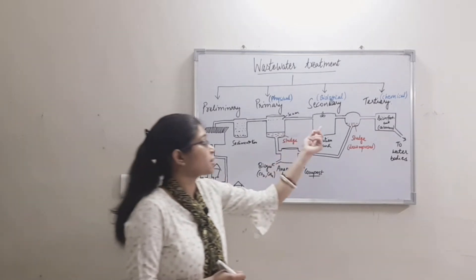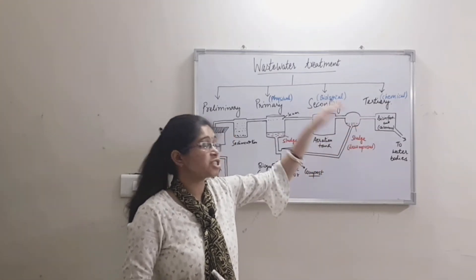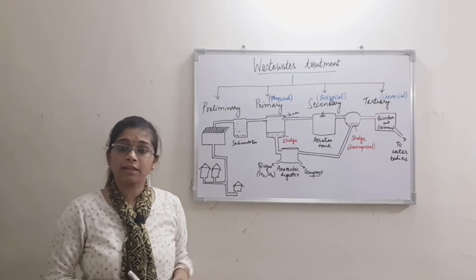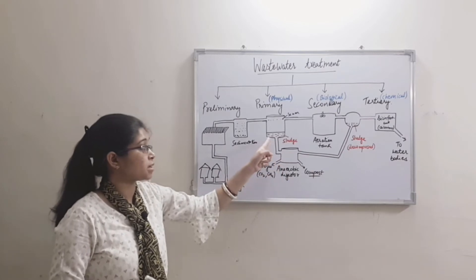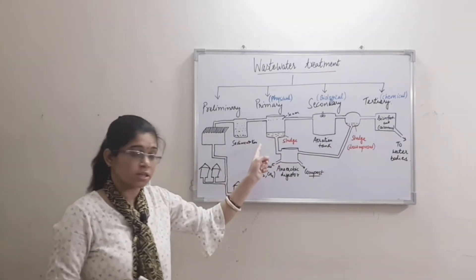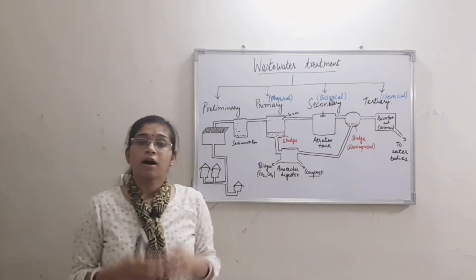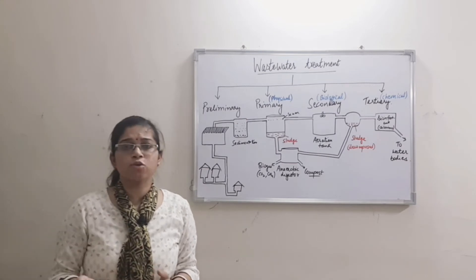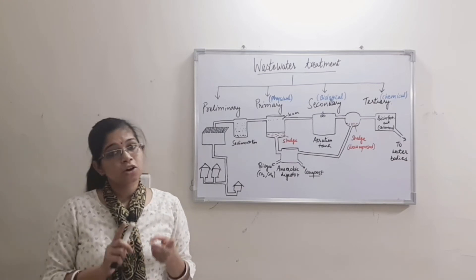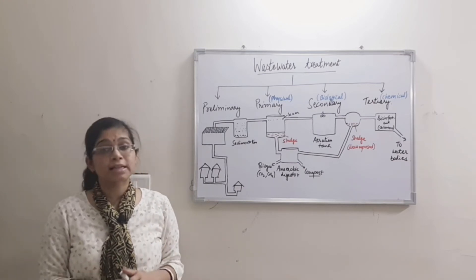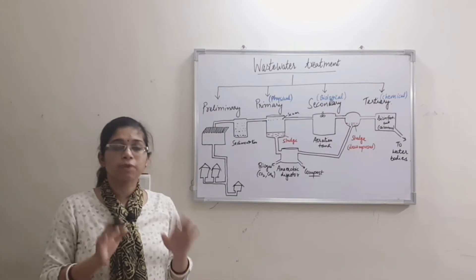The water then goes to another sedimentation tank. The sludge from there, called activated sludge, goes back to the aeration tank. The clarified water is transferred to tertiary treatment where we use chemicals like ozone or chlorine to remove remaining pollutants and smell. After this, the water is clean enough to be transferred directly to water bodies.